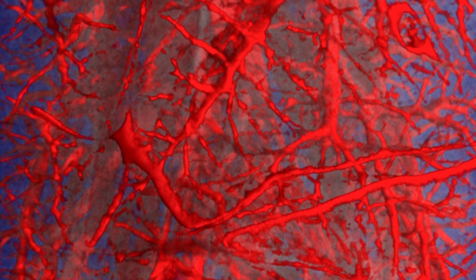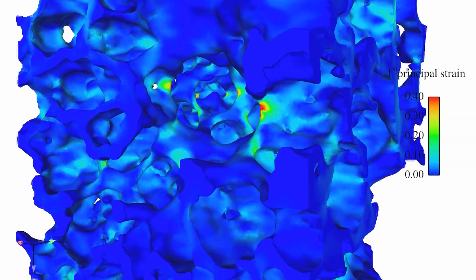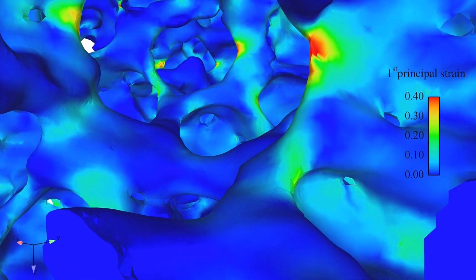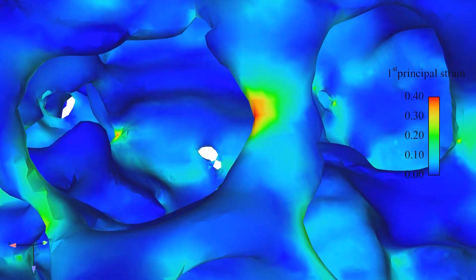What doctors would like to know is the level of stress that will put a patient at risk. And this is precisely what we looked at in the computer. We determined, for example, that an overall expansion of 10% can cause up to 40% expansion locally. There are hotspots in the geometry in which up to fourfold expansion takes place.